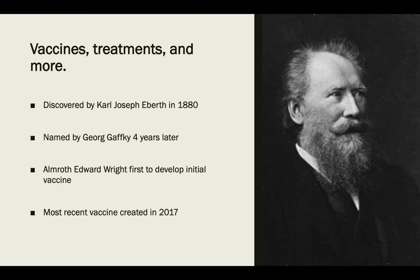Today, there are two types of the vaccine available, and the World Health Organization even recently approved a conjugate vaccine in December of 2017 that provides the person with longer-lasting immunity. The conjugation of the protein carbohydrates is what makes the vaccine safe for very young children, which is great news considering the other vaccines typically worked for those who are six years and older.